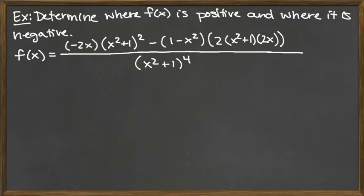We need this function to be in a nice factored form where the top is factored and the bottom is factored. Right now we've got the bottom nicely factored, but the top needs some cleaning up. I wanted to demonstrate how you can be smart about the cleanup. What we are looking at here is what would have been produced by applying the quotient rule a couple of times to get this function.